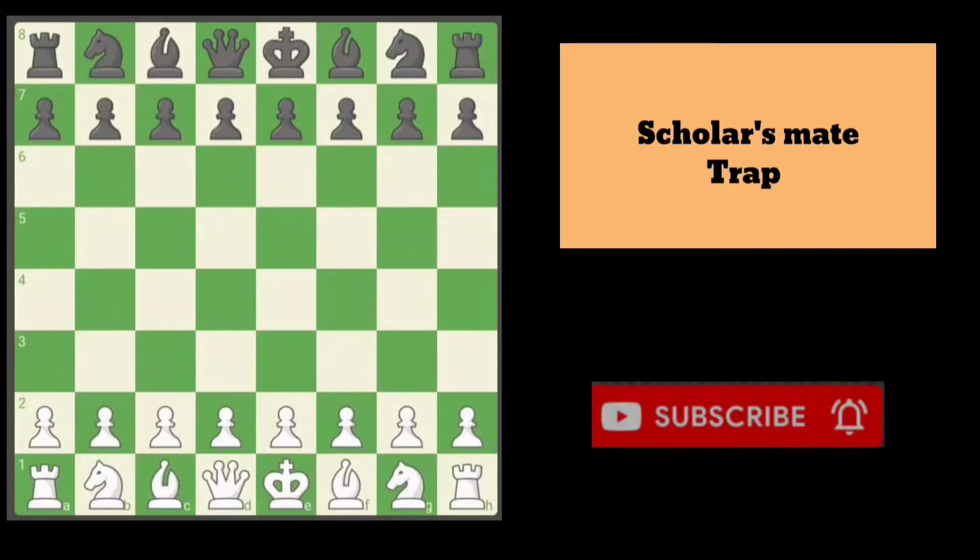This trap is named Scholar's Mate. Scholar's Mate is played with the white pieces to win a game very fast.